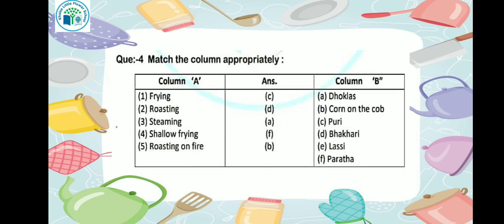Next is roasting on fire — roasting over a fire. So kids, corn on the cob (maka butta) — what do we do to it over a fire? We roast it. Have you eaten it, kids? So our answer here will be option B.